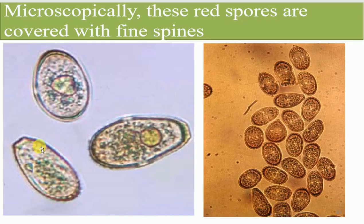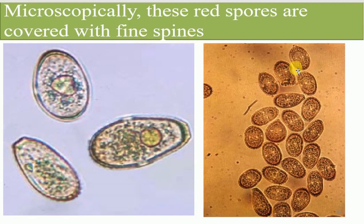Here is the pathogen of black rust, Puccinia graminis tritici, under the microscope. These red spores are covered with fine spines — you can see the pathogen under the microscope and observe the fine spines borne on the body of the spores.